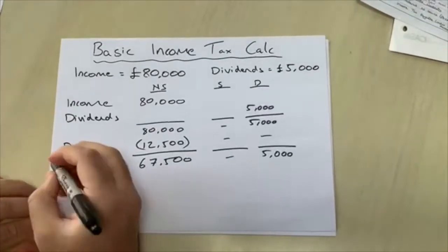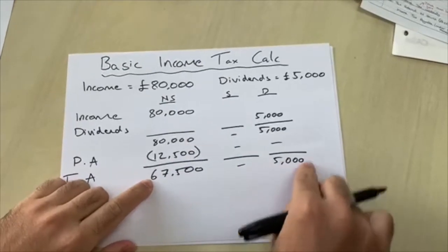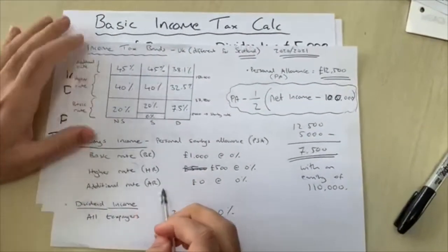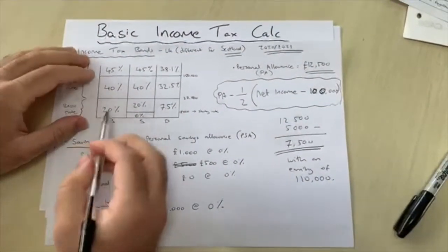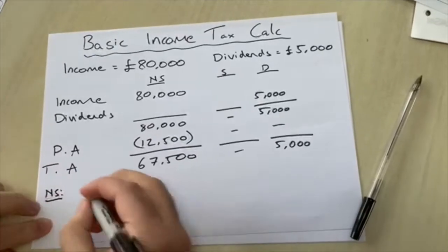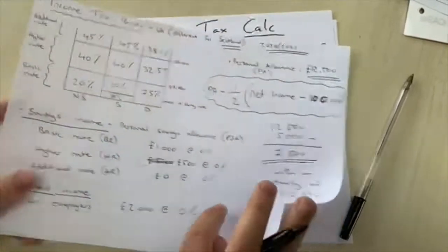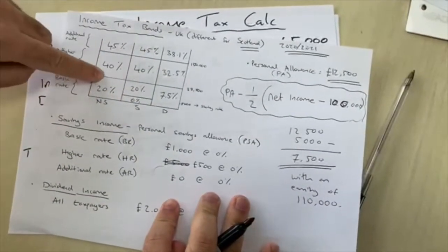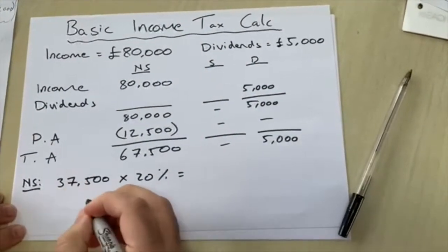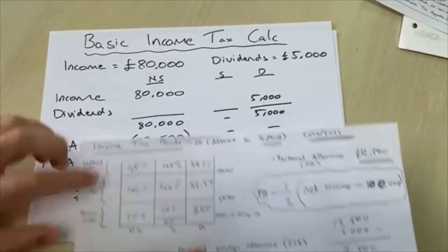We're taxed on £67,500 of employment income and £5,000 of dividends income. Using the table, £37,500 is taxed at 20% — the basic rate band — giving £7,500. The remainder, £30,000, is taxed at 40%, giving £12,000. There's no savings income, so no calculation needed there.